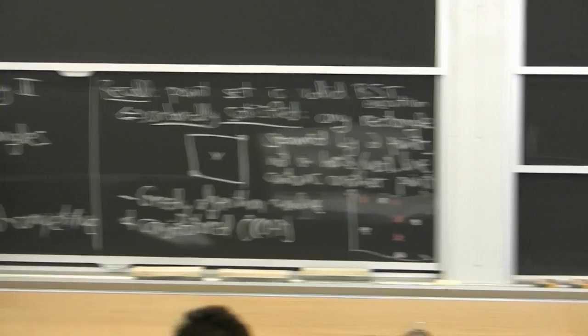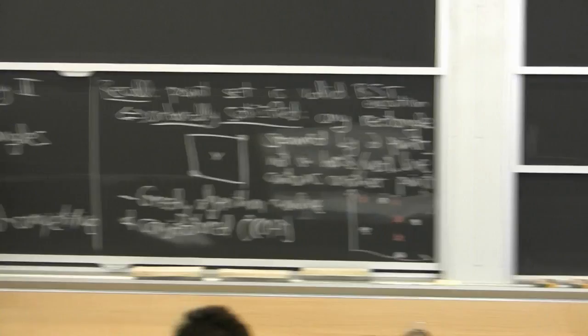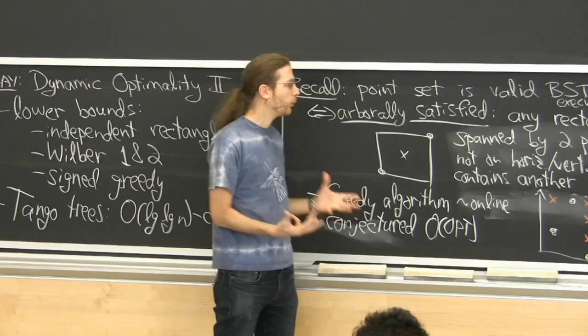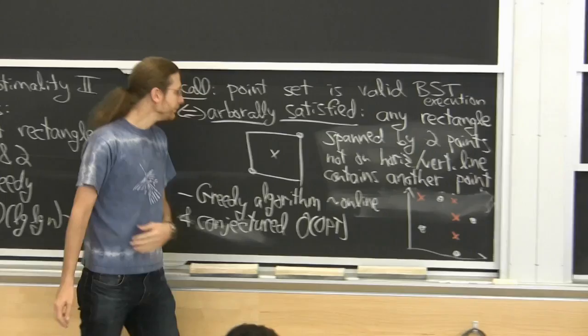Welcome back to Dynamic Optimality. This is the second of two lectures. Today we're going to focus mainly on lower bounds. Last time, we saw this geometric connection to binary search trees — is there one best binary search tree? We represented binary search trees, or at least the execution of those algorithms, as point sets in time space.